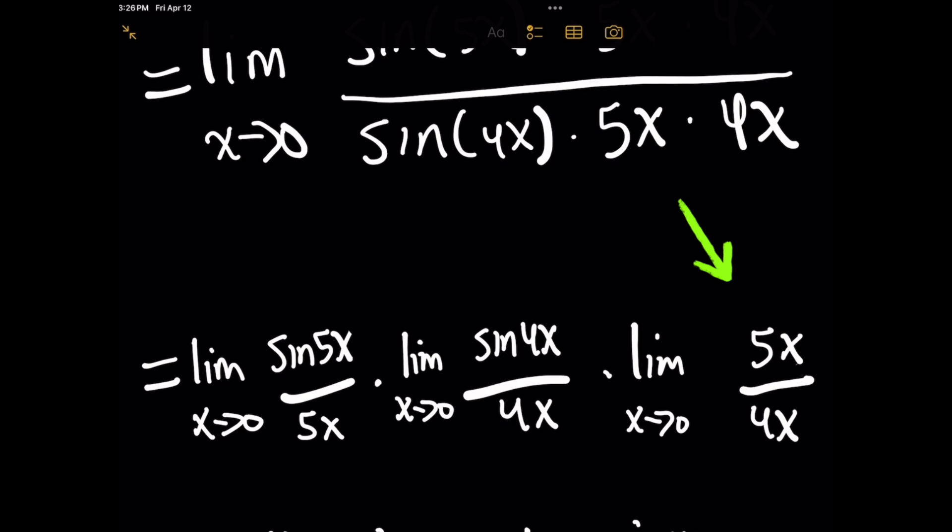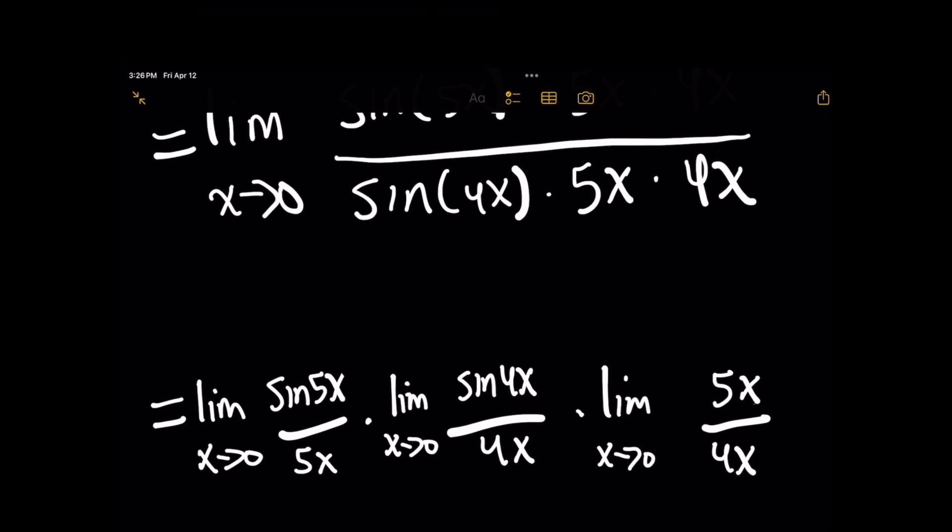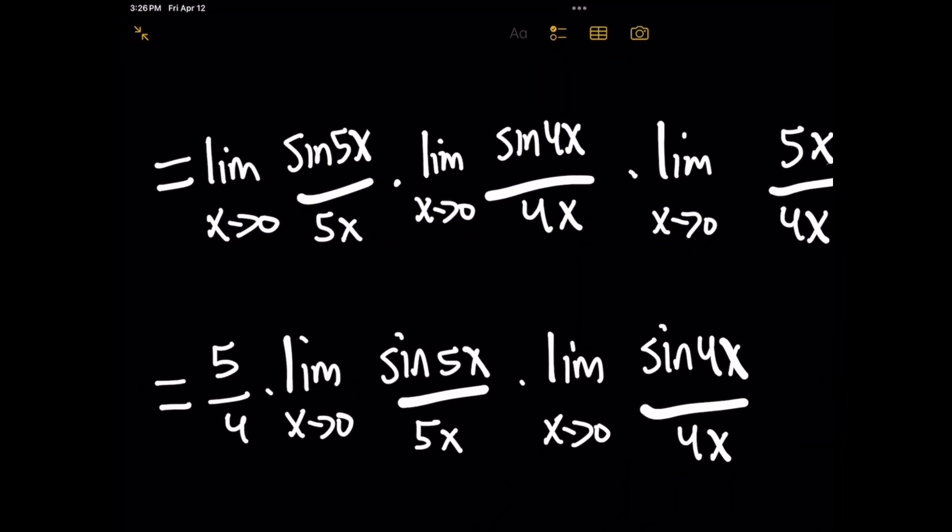And then this right-hand limit looks really easy. Because if you look at the right-hand side, notice how the x's cancel out. So that limit just simply becomes 5 over 4, right? And what I'm going to do is I'm going to tackle that one first. And that result 5 over 4, I'm going to bring it in front and multiply it by the other two remaining limits.